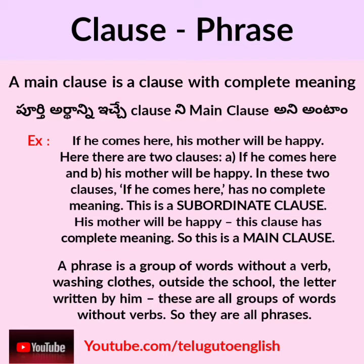A main clause is a clause with complete meaning. For example: 'if he comes here, his mother will be happy.' Here there are two clauses. Clause A: 'if he comes here' — this has no complete meaning, so it is a subordinate clause. Clause B: 'his mother will be happy' — this clause has complete meaning, so this is a main clause.